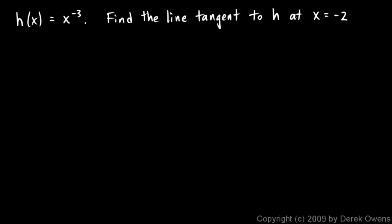We're still talking about tangent lines, and we're going to look at a few more examples of finding a line that is tangent to a curve. Here's our first example: h of x is x to the negative 3, and we're told to find the line tangent to h at x equals negative 2.